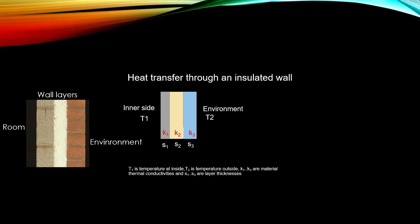Let's take a simple example. We have a wall which consists of different layers: an inner layer, insulation, and an outer layer. We want to calculate the heat flux from this room to the environment, and we know those materials — we know the thermal conductivity and also the thicknesses of those layers.